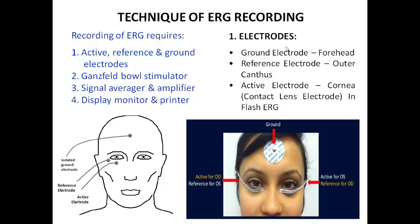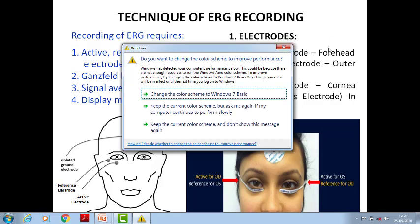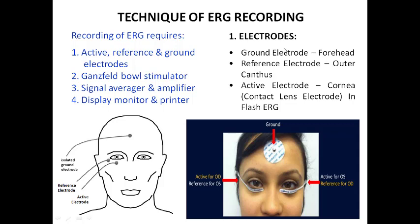For recording of ERG, we need electrodes. There are three types: active electrode, reference electrode, and ground electrode. The second requirement is a Ganzfeld bowl stimulator. The third requirement is a signal averager and amplifier. The fourth requirement is a display monitor or printer.